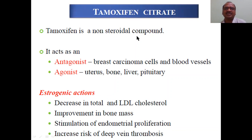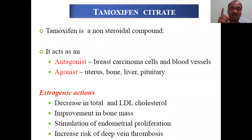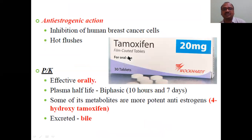Tamoxifen citrate is a non-steroidal compound. It acts as an antagonist in breast carcinoma cells and blood vessels — that's why it is good for breast cancer. In uterus, bone, liver, and pituitary, it acts as an agonist. Tamoxifen stops breast cancer because estrogen causes breast cancer. Estrogenic actions of tamoxifen include decreased total LDL and improvement of bone mass. Anti-estrogenic actions include inhibition of human breast cancer cells. Side effect: hot flushes — an intense feeling of heat in the face.